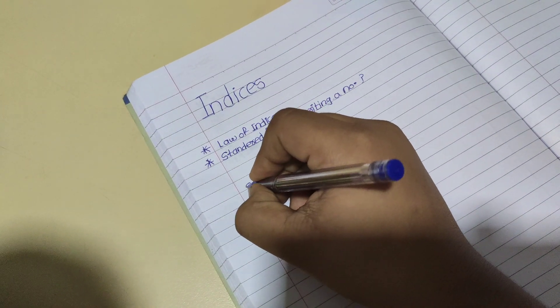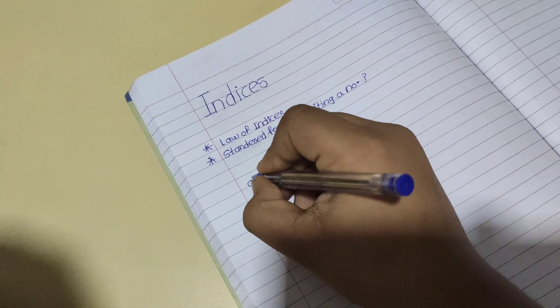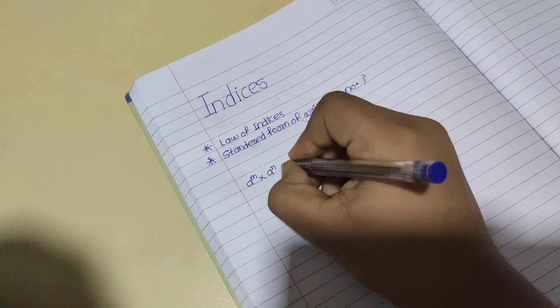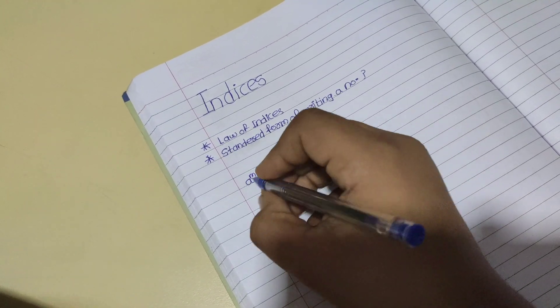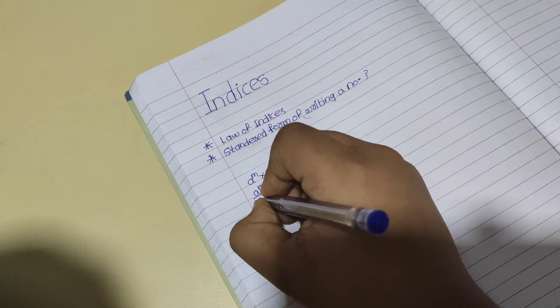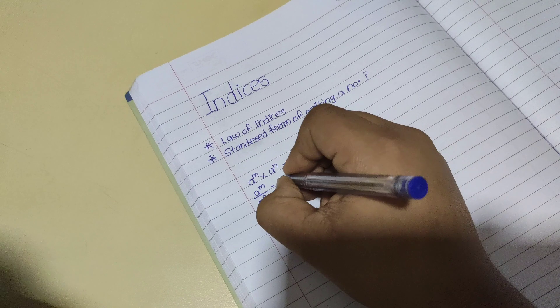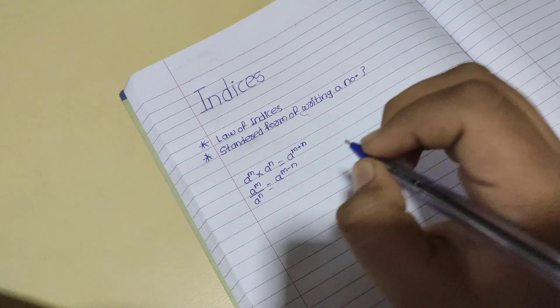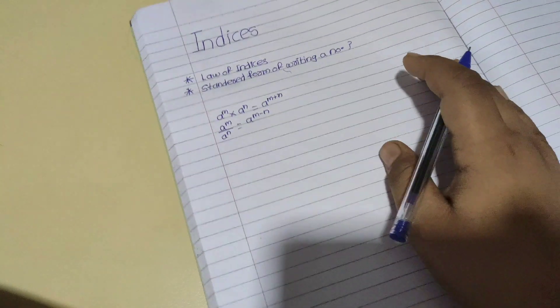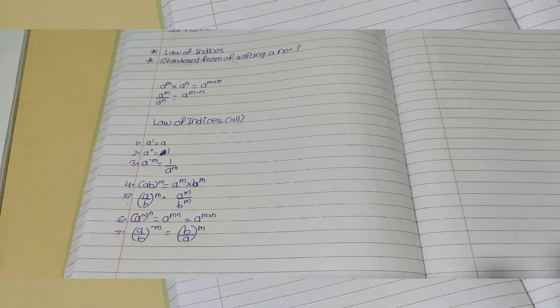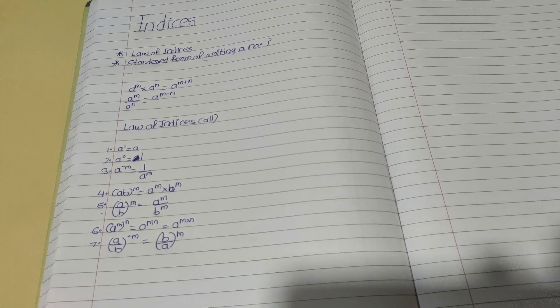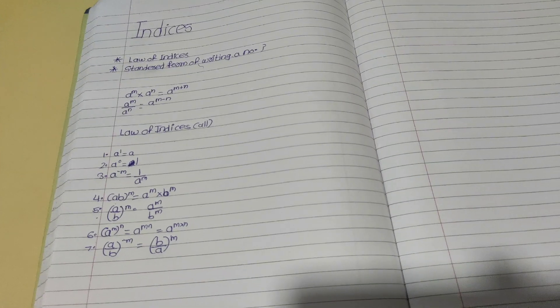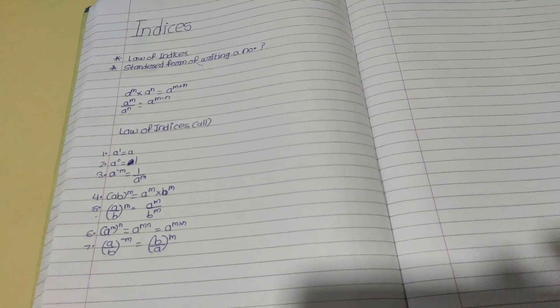Laws of Indices are like what you learned in the last video. So let's show you: a raised to the power of m, into a raised to the power of n, equals a raised to the power of m plus n. This is a law. And another law: a raised to the power of m upon a raised to the power of n is equal to a raised to the power of m minus n. These are all laws. There are seven laws in total.